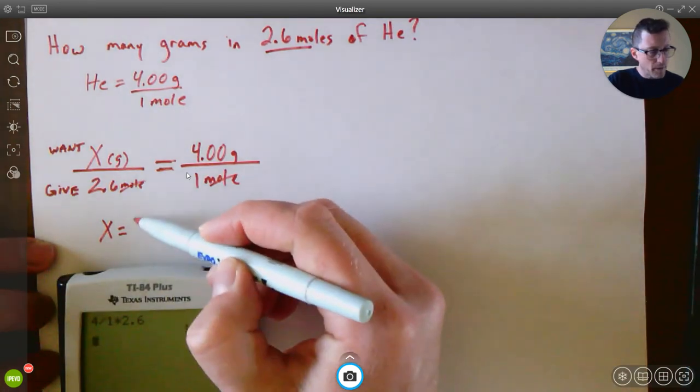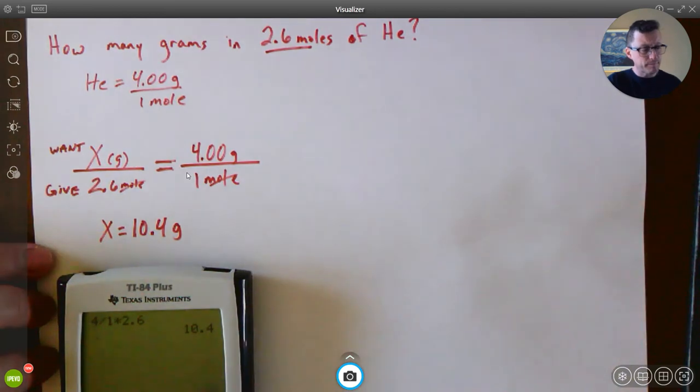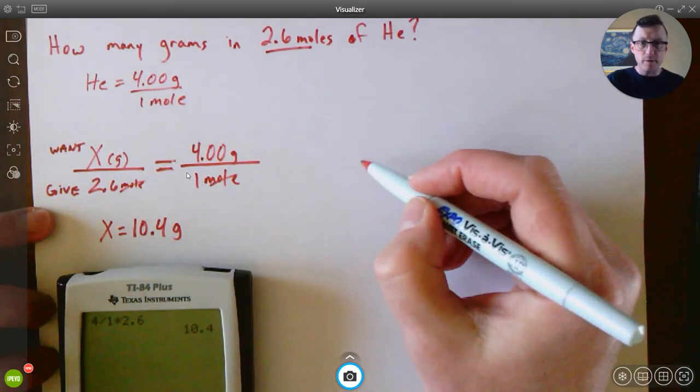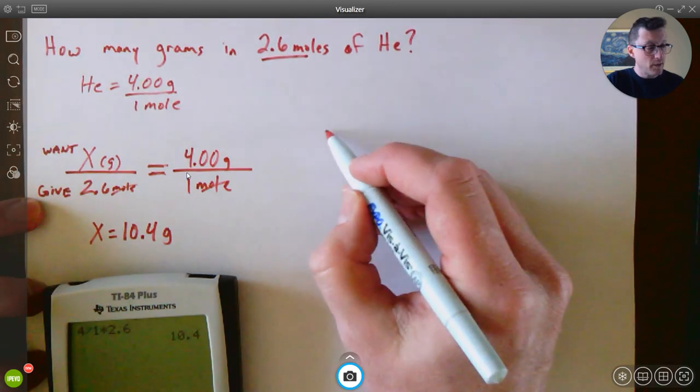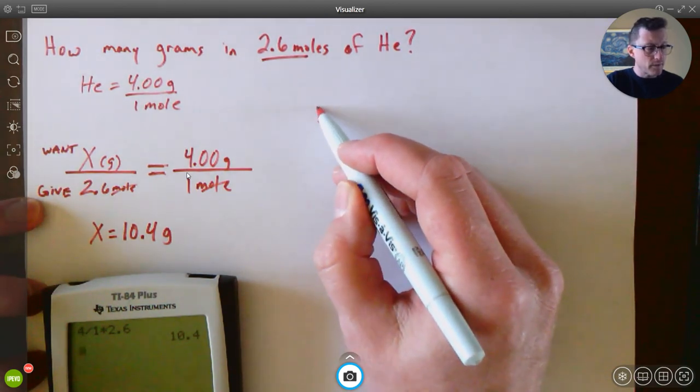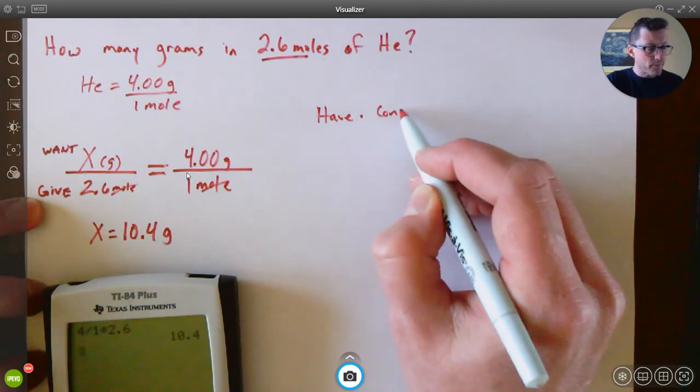So my answer here is 10.4 grams. Now another way we can do this is with a conversion just like we've taught you in the past, where you take okay, here is what is given or what you have times a conversion fraction.